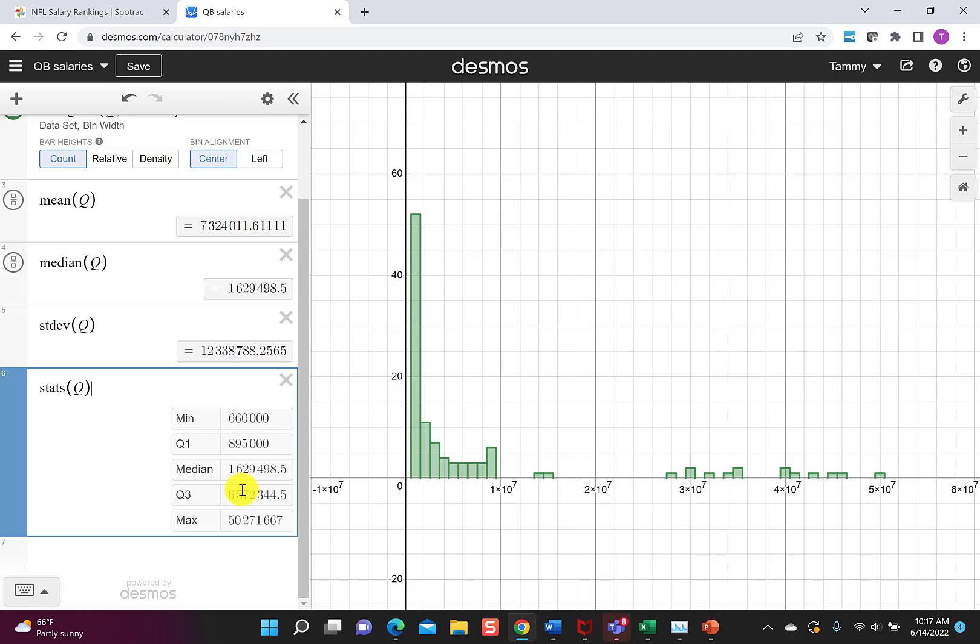Quarter three is $6.5 million roughly. So another 25% make between these two values of $1.6 million and $6.57 million. And then the maximum is out here at $50 million. So another 25% are between there. So I kind of like this. This gives me a good idea. 25% in this first range, 25% in the second range, 25% in this third range, and then the rest of them out here.